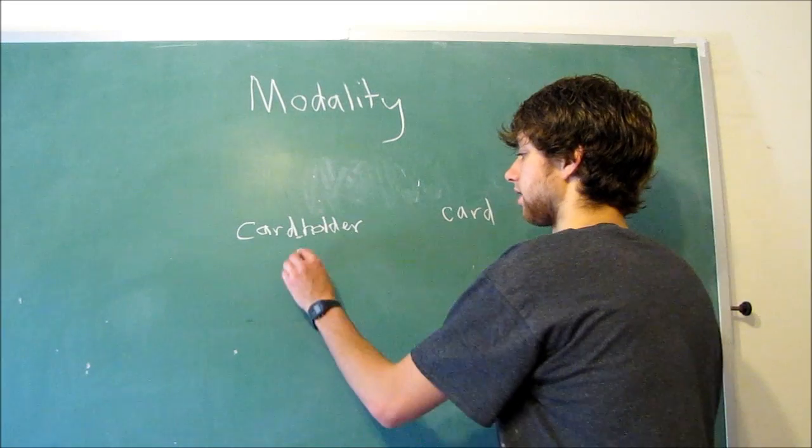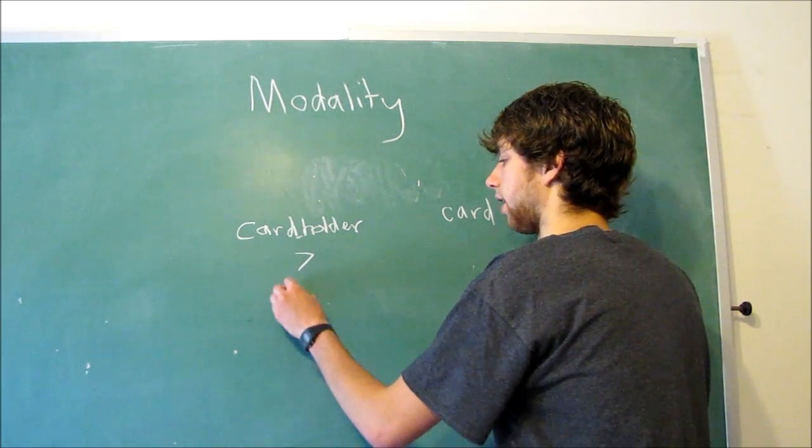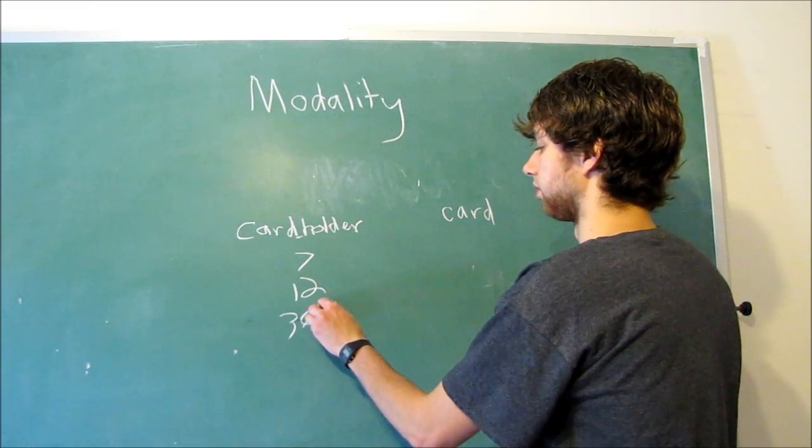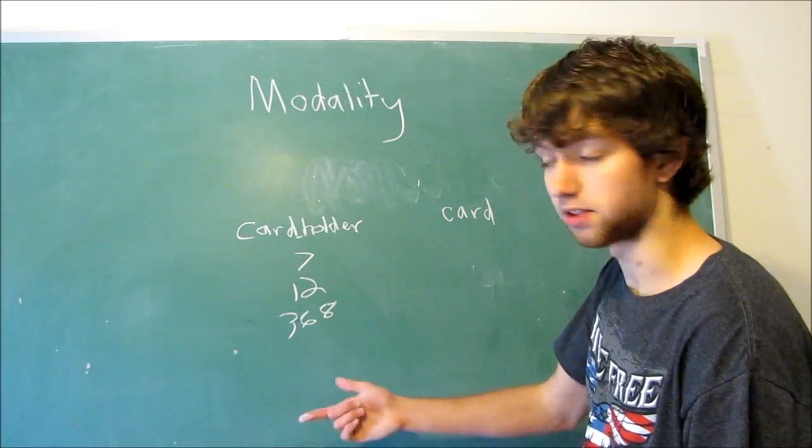So we have like this guy, and he has an ID of seven. We have another guy with the ID of 12, and then 368, and so forth. Those are IDs.